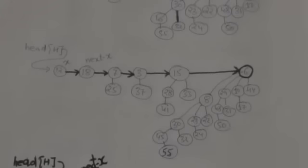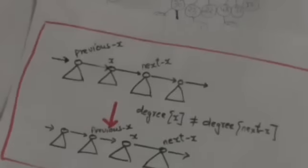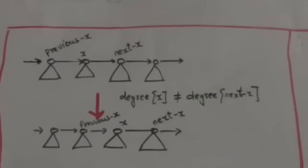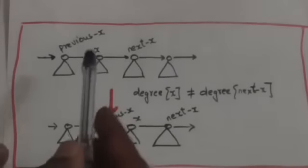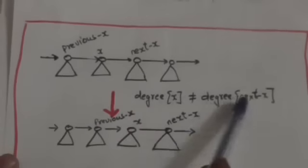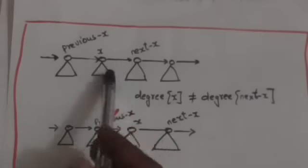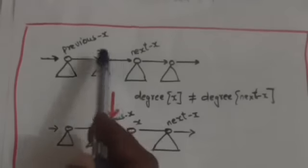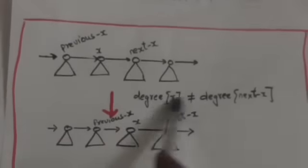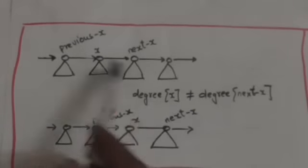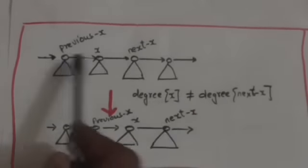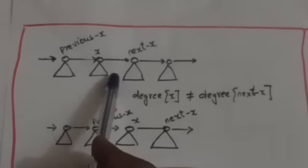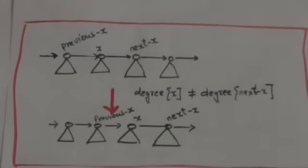The first rule is: when the degree of x is not equal to the degree of next x, we will simply march all pointers one position farther down the list.